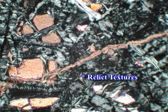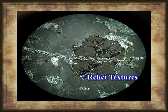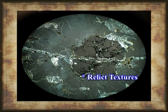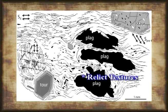Relict textures: there are several types of relict textures. Relict textures in metamorphic rocks are indicated by applying the prefix 'blasto' to the original textural name. Relict textures are best preserved in low-grade rocks.